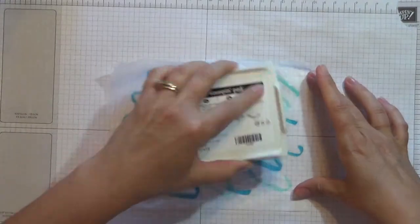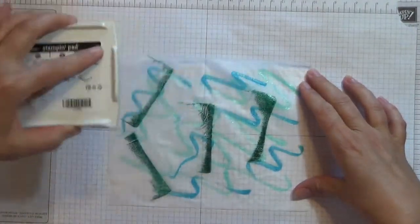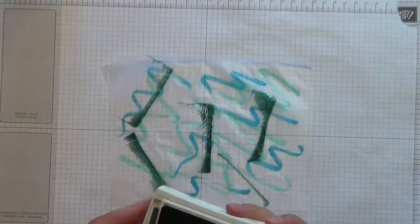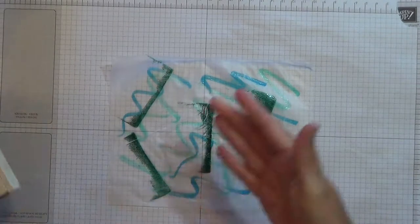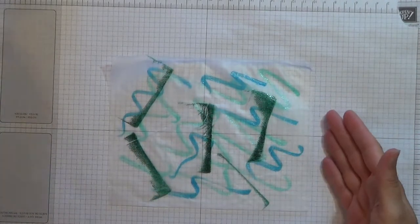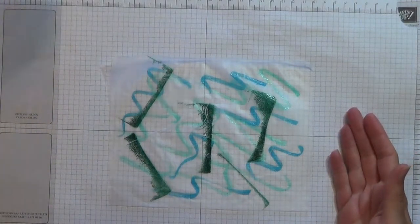And then I just want to add some of this new in color, the Tranquil Tide. And I'm just brushing the edges of my stamp pad on there. And so if you don't have markers, if you just have ink pads, you can do that for this technique.